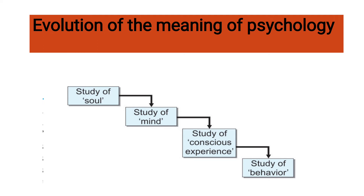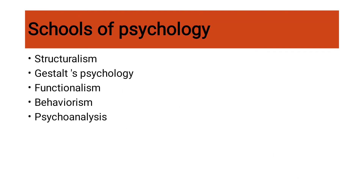Next, we will see the schools of psychology. There are five schools of psychology: structuralism, gestalt psychology, functionalism, behaviorism, and psychoanalysis.